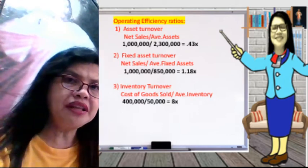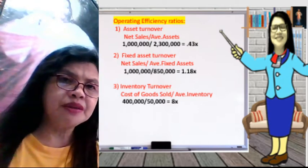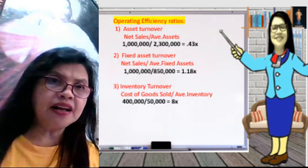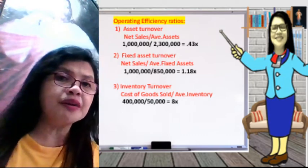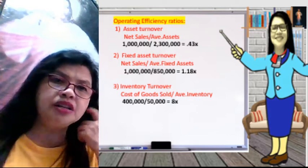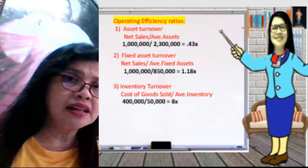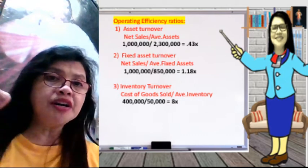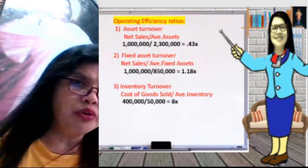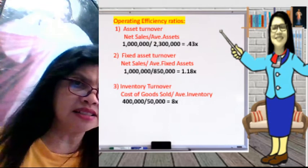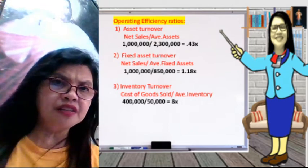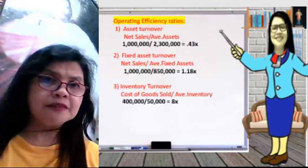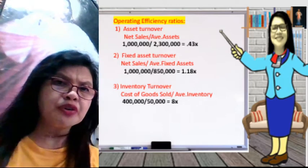Now the operating efficiency ratios. We have the asset turnover — the formula is net sales over average assets, which shows how much sales you generate from your assets. 1,000,000 divided by 2,300,000 gives 0.43 times, meaning 0.43 centavos was generated by your assets for every peso sale. The fixed asset turnover is net sales over average fixed assets: 1,000,000 divided by 850,000 gives 1.18 times, meaning your fixed assets contribute 1.18 times for every peso of sales.